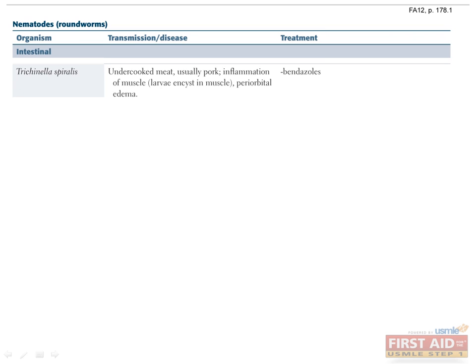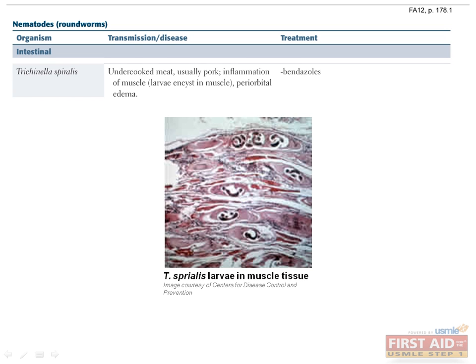Trichinella spiralis is sometimes known as the pork roundworm because transmission occurs by ingesting larvae in undercooked pork. Larvae mature in the digestive tract, penetrate the intestinal wall, and can enter the bloodstream, where they often migrate into muscle. Diagnosis is confirmed by muscle biopsy. In addition to GI symptoms such as nausea, vomiting, and diarrhea, you may also see high fever, eosinophilia, and periorbital edema as the migrating larvae reach peripheral tissues.